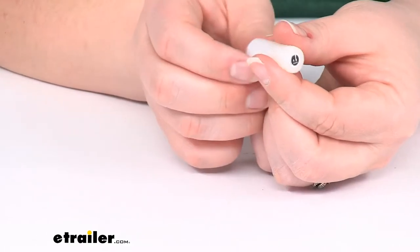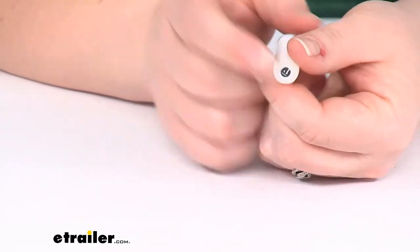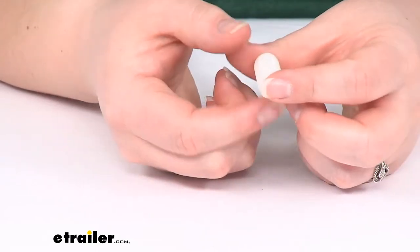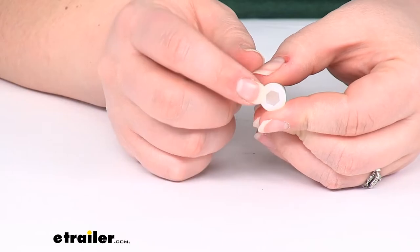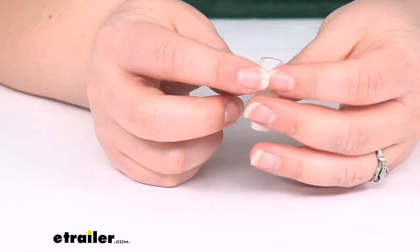Again, it just threads into that tonneau cover to give you the spot where that clamp should go. So once it's in place, you really shouldn't have to worry about these. It does have a hex opening there, so you can tighten it down in place.